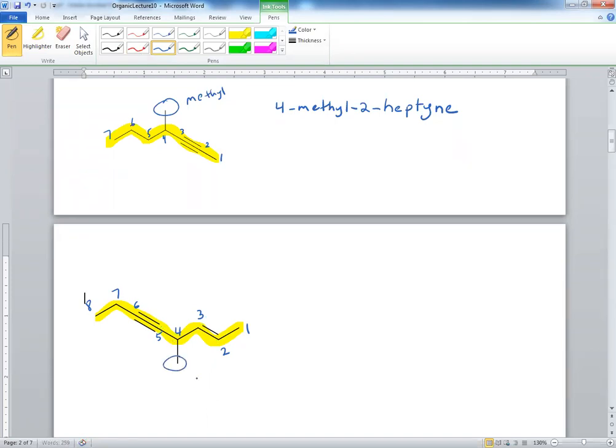Of course, we have a methyl at the fourth carbon, so we start with that, 4-methyl. But you need to number your double bond, so that's at the second carbon, 2. Now, this is where it gets a little bit weird.